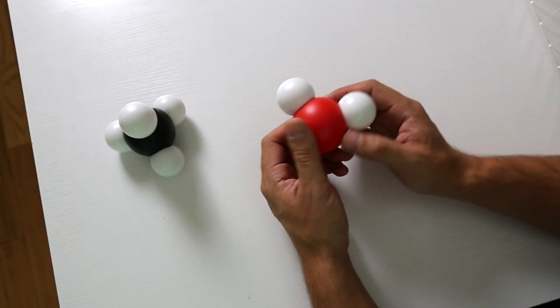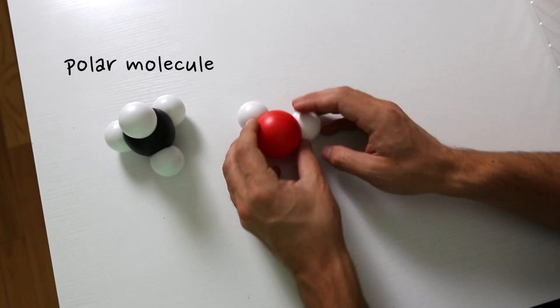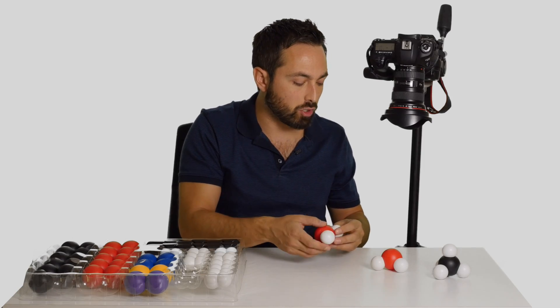And the result of that is what's called a polar molecule, a molecule that has a more negative side over here and a more positive side. And that results in bonding between molecules.